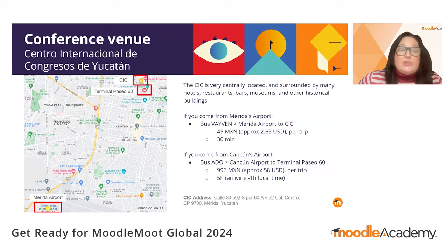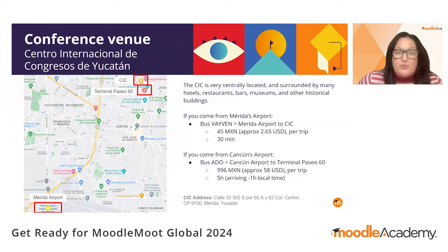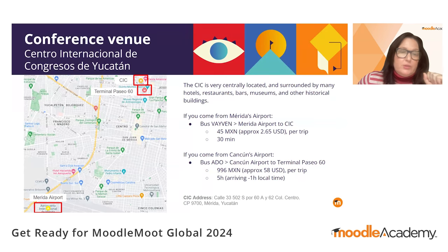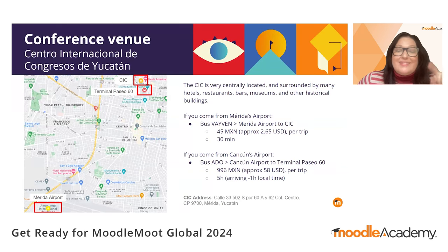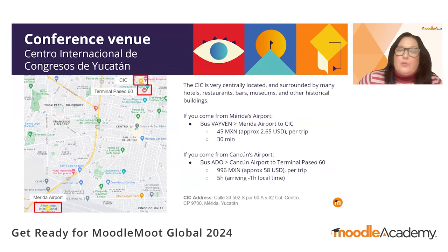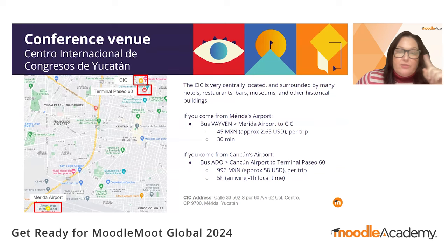There are different ways to arrive at the CIC. If you come from Mérida's airport, you can take the Vaivén bus and get off at the CIC stop. If you come from Cancun's airport, you can take the ADO buses from the airport to Mérida and get off at Terminal Paseo 60, only a few minutes of walking from the CIC. Just take into account there's a one hour difference between Cancun and Mérida — Mérida has one hour less.